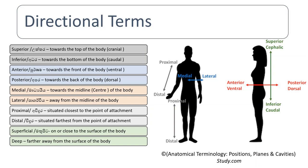Now let's look at directional terms. You have superior and inferior. Superior means towards the top of the body. Then you have inferior, which means towards the bottom of the body.